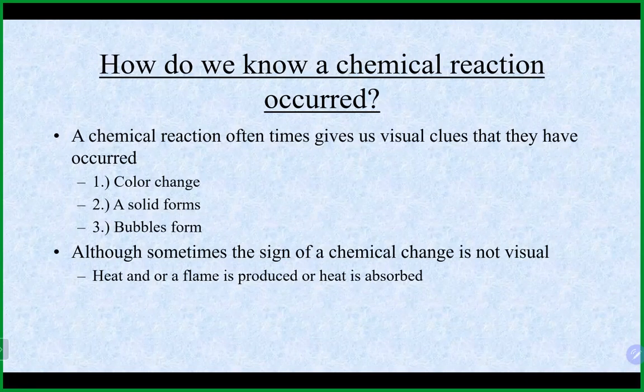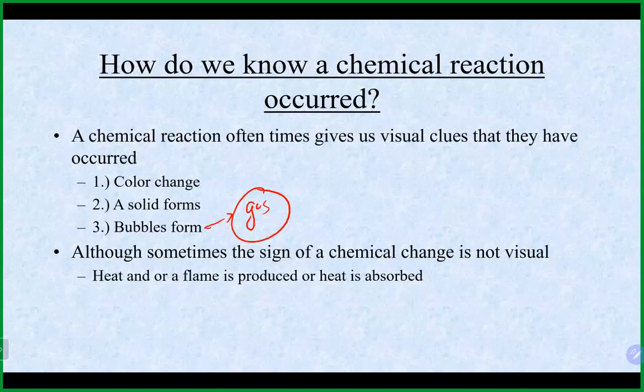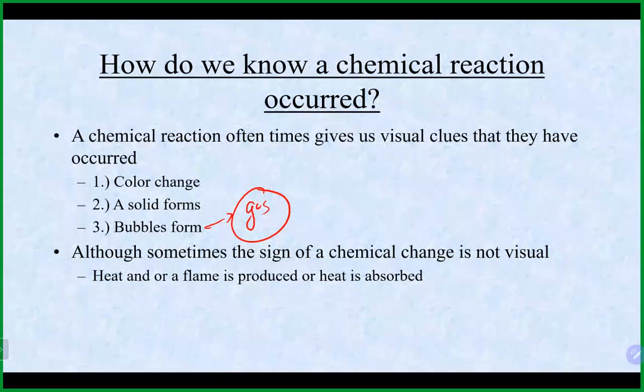There are often visual signs that a reaction is occurring. Color changes, especially those resulting in a solid forming, are one sign. Bubbles usually indicate that some type of gas has been created - we've done experiments producing hydrogen gas and oxygen gas. Heat is also a sign of chemical change: a test tube getting warm or cool indicates energy being given off or absorbed. A flame is another clear visual sign of a reaction.